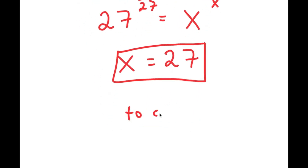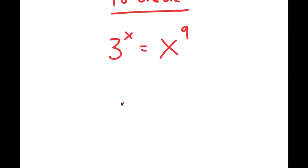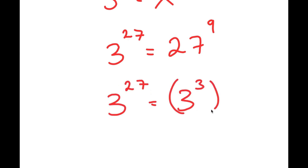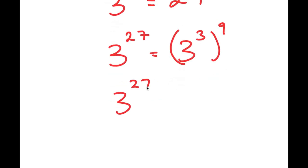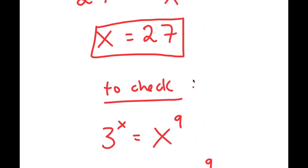So now to check, I can plug this in to my equation: 3 to the power of x equals x to the power of 9. I get 3 to the power of 27 is equal to 27 to the power of 9. And 27 is the same thing as 3 to the power of 3. So I get 3 to the power of 27 equals 3 to the power of 3, to the power of 9, which equals 3 to the power of 3 times 9. And 3 times 9 is 27, so I get 3 to the power of 27 equals 3 to the power of 27. This is correct, so my solution x equals 27 is right as well.